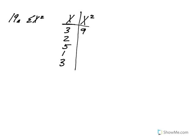So 3 squared is 9, 2 squared is 4, 5 squared is 25, 1 squared is 1, and 3 squared is 9.